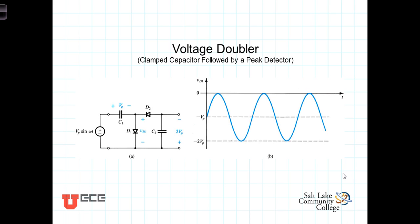We can understand the voltage doubler by looking at it as two stages or two cascaded circuits that we've already looked at.